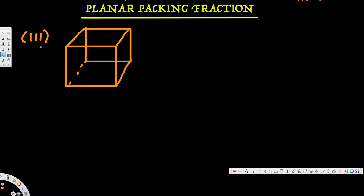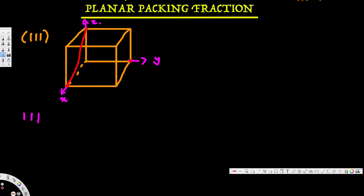This is our cube and we want to draw the (1 1 1) plane. Whenever Miller indices are given, we have to take the reciprocal in order to draw the plane. If you take the reciprocal of (1 1 1), all of them are just 1, so we put 1 on the x-axis, 1 on the y-axis, and 1 on the z-axis. Connecting all of them gives us the plane for the given Miller indices.